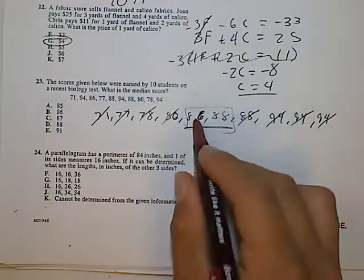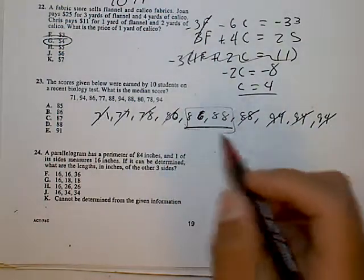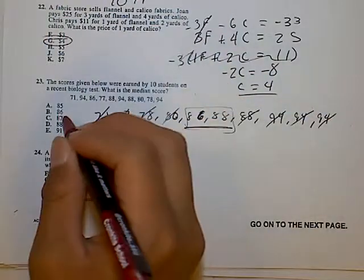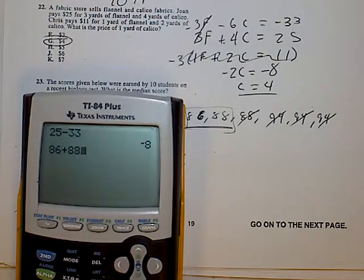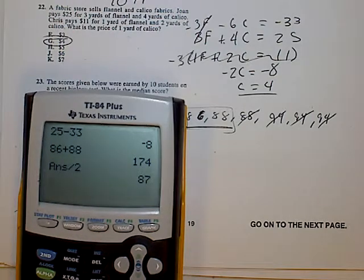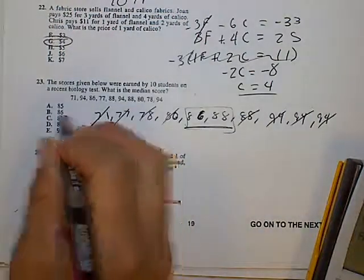So 86 plus 88 divided by 2 should just give you 87. If you want to do it in the calculator just to double check, 86 plus 88 divided by 2 gives you 87, so the answer is C.